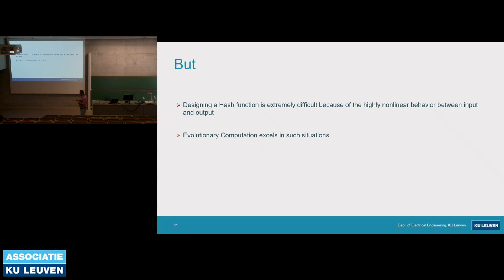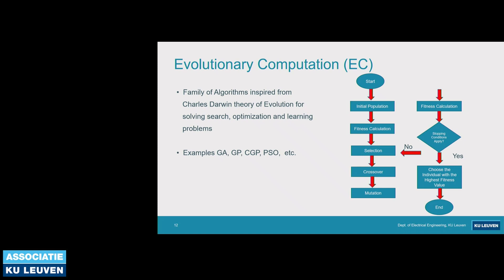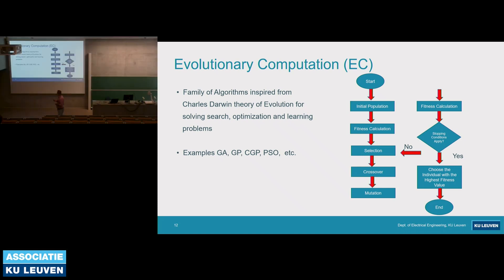Network monitoring applications detecting packets in real time should be ready for such high bandwidth. The problem is that designing a hash function is not an easy task — it's very complex because the relationship between input and output variables is very nonlinear, abstruse, and involves a lot of nonlinearity. That is where evolutionary computation techniques excel. These are a family of algorithms inspired by Charles Darwin's theory of evolution.